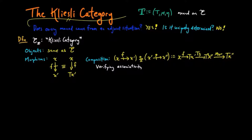For associativity, given a compatible triple of morphisms H, G, F in the Kleisli category — and I should note that when I write composition in this form, it is of the opposite order of how I write it in arrow form above. It is my idiosyncrasy, and I apologize, but I'll be consistent with these two different notations. So by H, G, F I mean F followed by G followed by H, as indicated here.